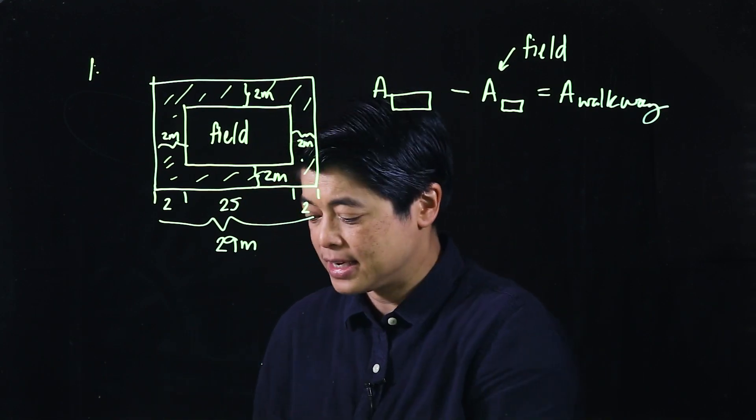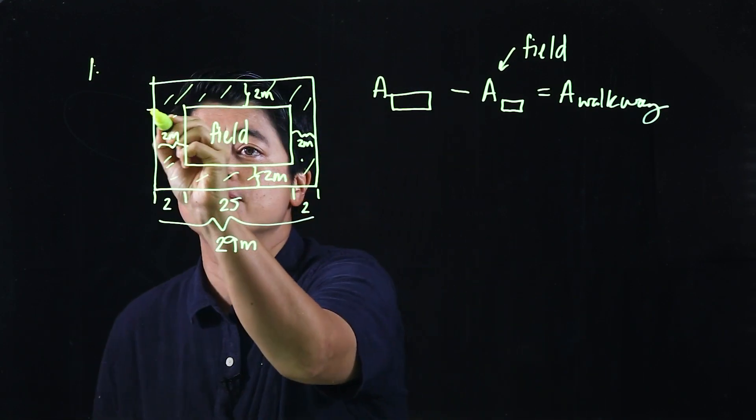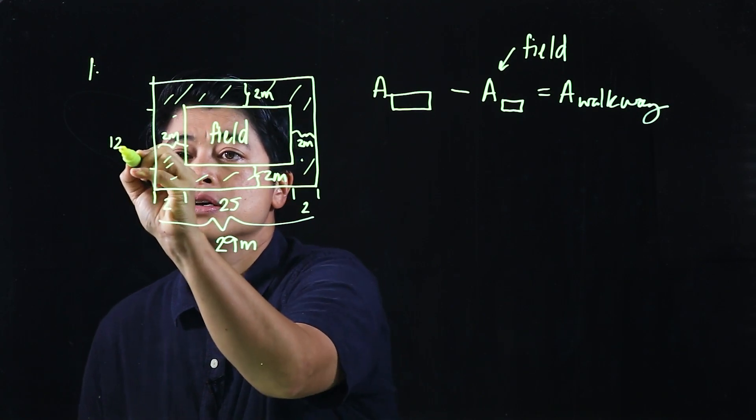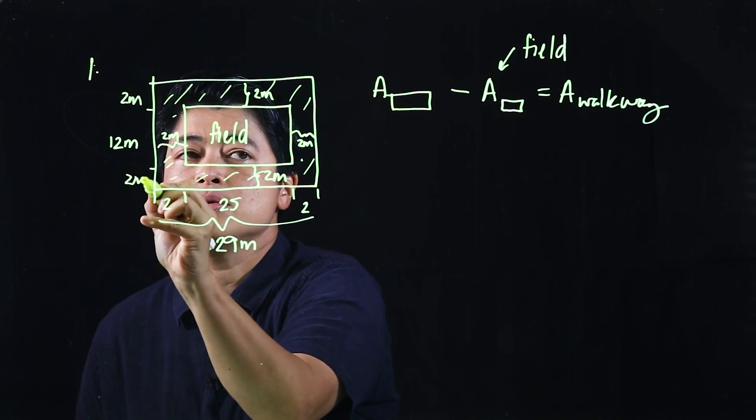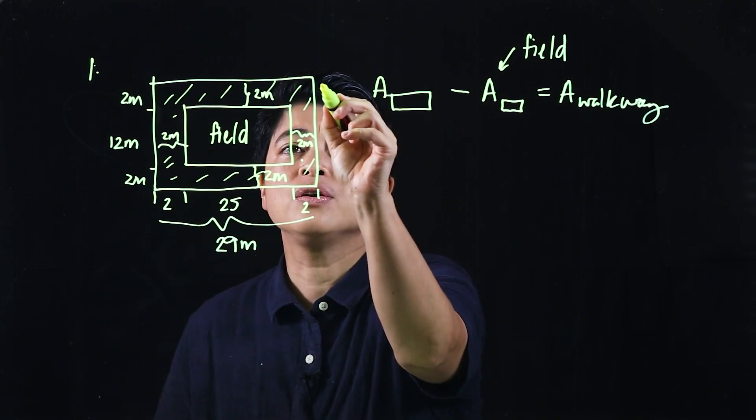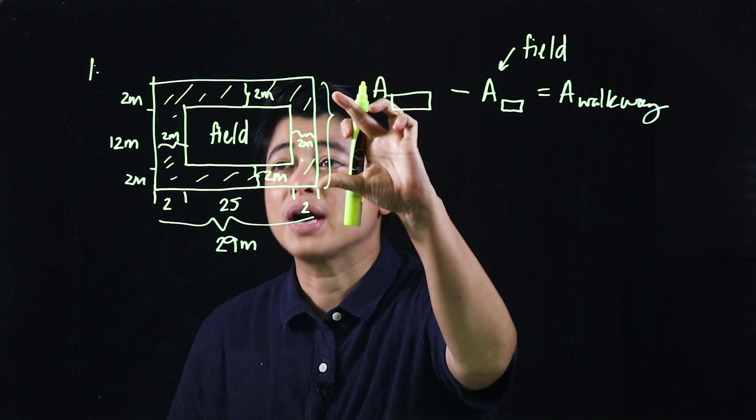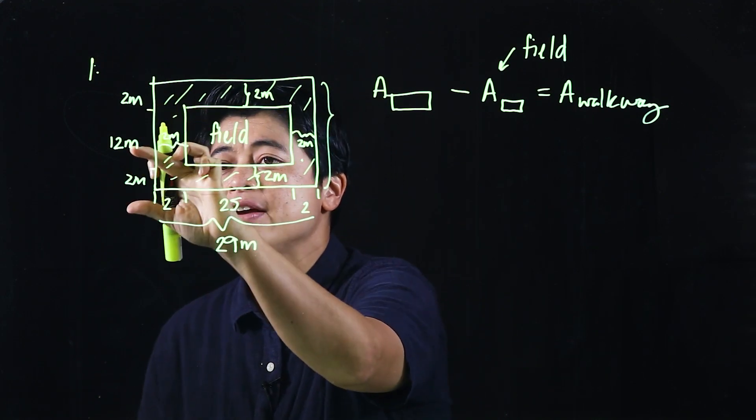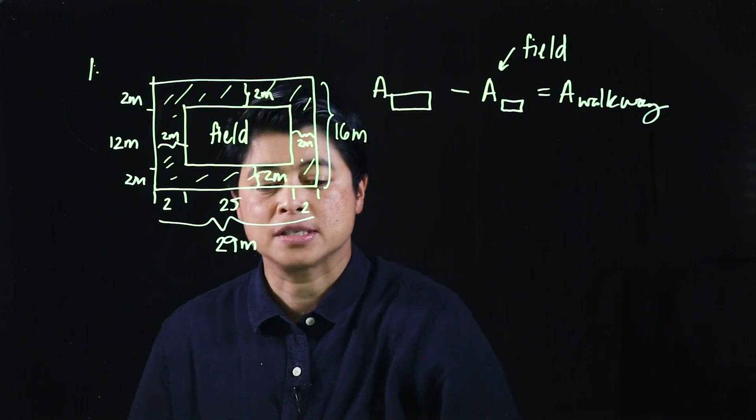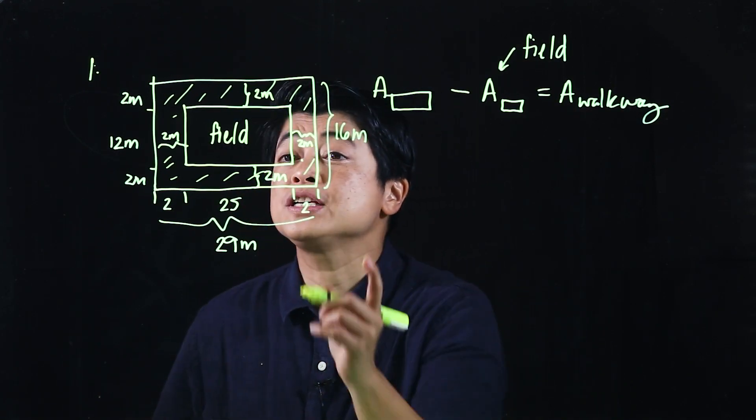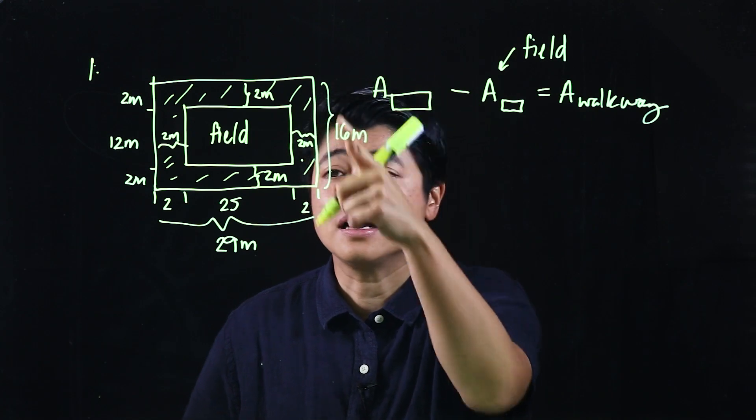In here they say that this is 12, 12 from here to here, so 12 meters. This is 2 meters and this is also 2 meters. So if we follow that, that whole breadth is technically 14 plus 2 is 16 meters.